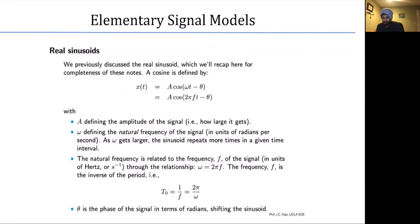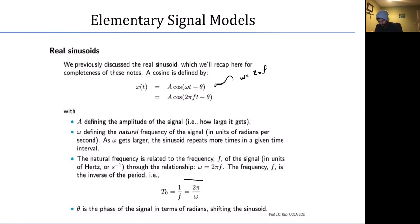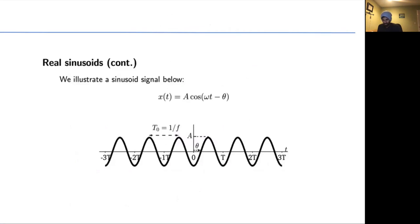A real sinusoid is x(t) = A cos(ωt − θ), where ω = 2πf. Here A is the amplitude, ω is the angular frequency, f is the ordinary frequency in hertz (equal to the inverse of the period), and θ is the phase in radians which shifts the sinusoid.